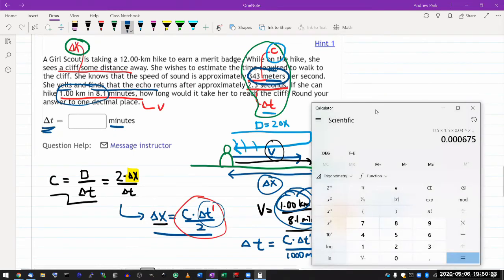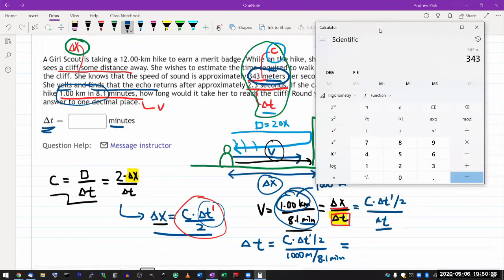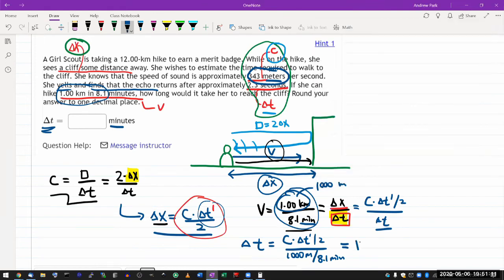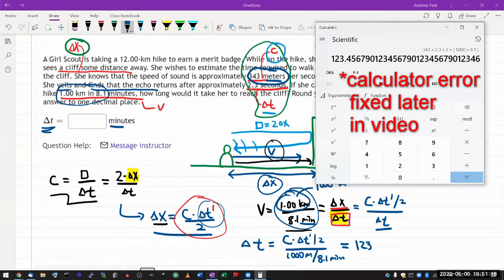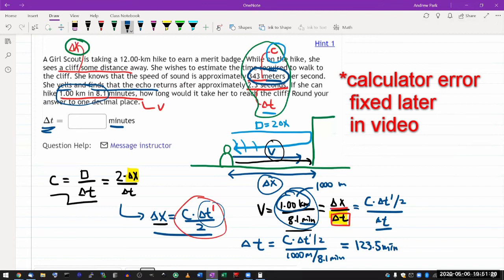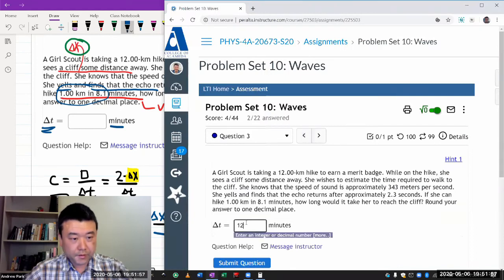So the numbers are 343, that's my C, times 2.3 seconds. That seconds will cancel out the second meter per second, so that's fine. Divide by 2 divided by 1,000 meters. Oh wait, I should have done parenthesis open, 1,000 meters divided by 8.1 meters, parenthesis close. So I get 123 minutes. Oh, one decimal place. 123.5 minutes. So I guess it must be a fair distance away. So yeah, I guess that makes sense. So the answer is 123.5 minutes. Let's plug it in. 123.5 minutes. Incorrect. What did I do wrong?